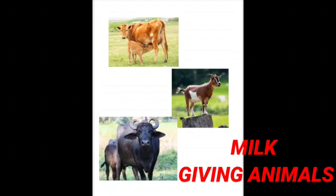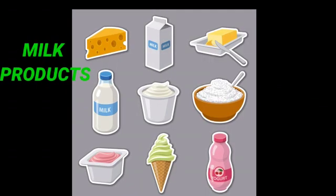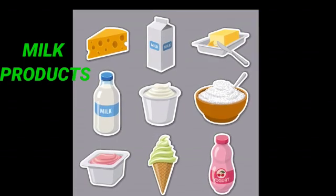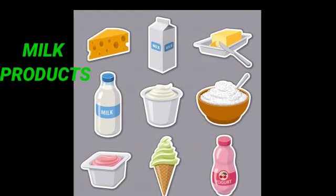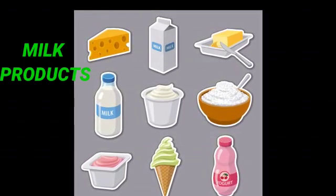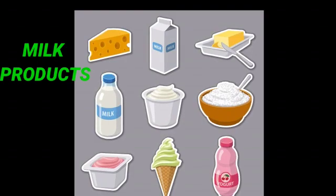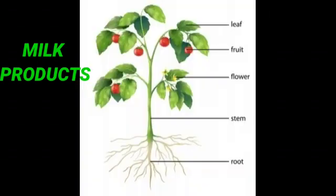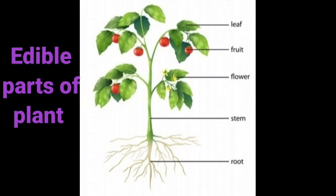You can also name some other animals which give us milk. From milk we get milk products like cheese, butter, curd, ice cream, and milkshakes. Now let us see some edible parts of a plant. Edible means the food or thing which we can eat.